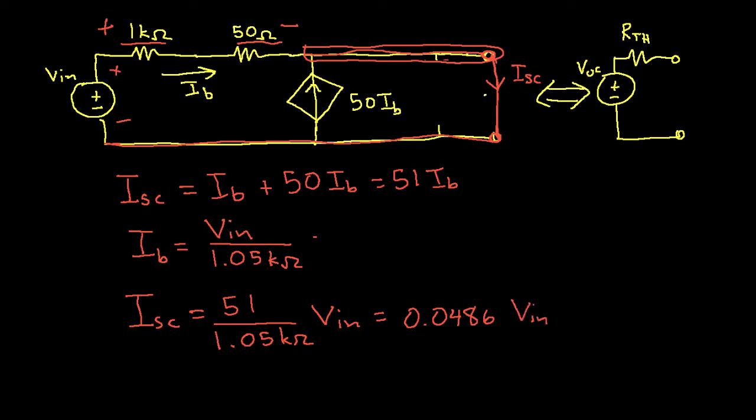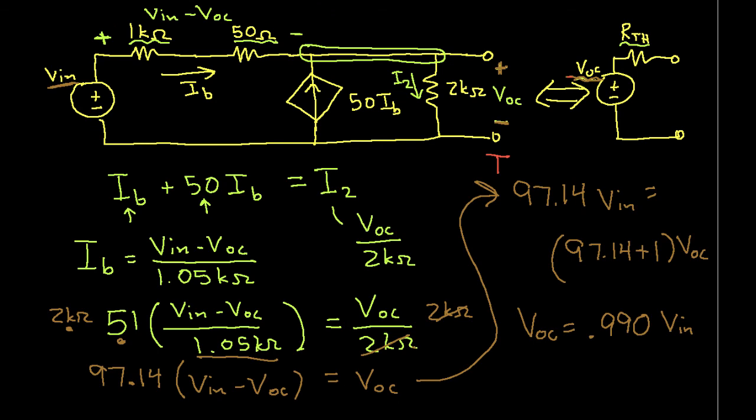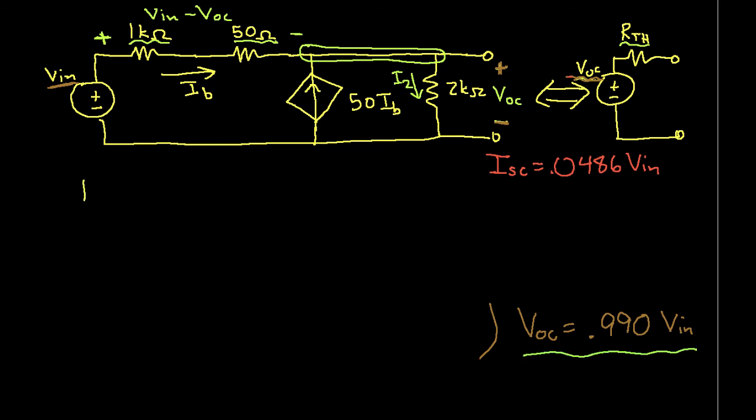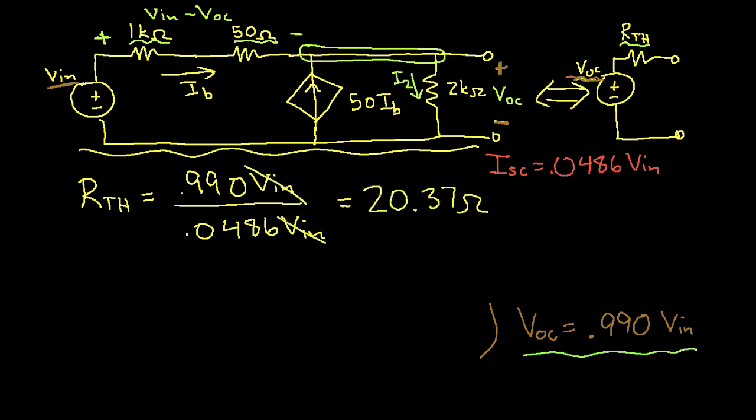So now we can compute the Thevenin resistance. Let's go back to the open circuit voltage VOC. We have ISC is equal to 0.0486 VN. Our Thevenin is VOC divided by ISC, which is 20.37 ohms. So now we have all the information we need to draw the Thevenin equivalent circuit.